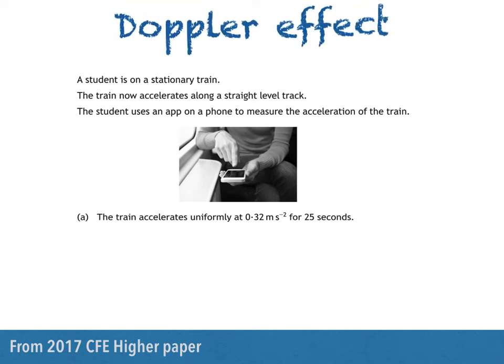Hi there. In this video, I'll be answering a question on the Doppler effect, calculating the speed of a train from the frequency of its horn and the frequency heard by an observer as the train moves towards her. We'll also be explaining why the frequency of the sound appears to change as the train moves away. This is a question from the 2017 CFE Higher paper.